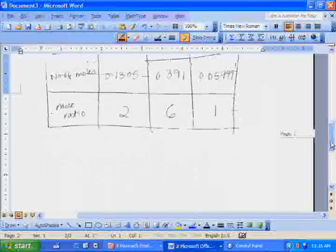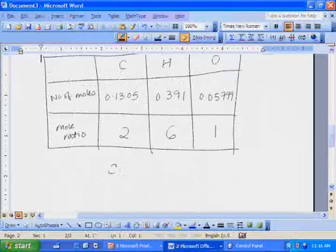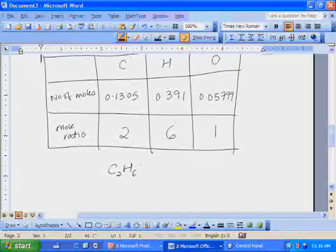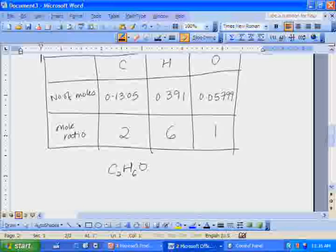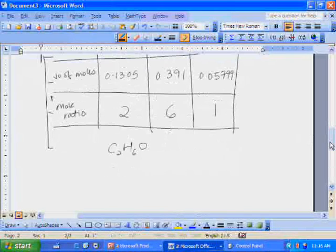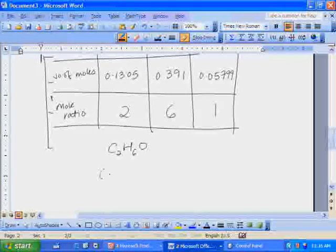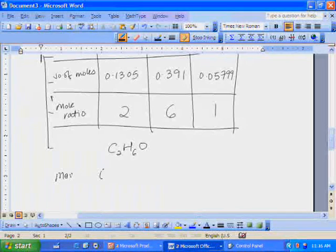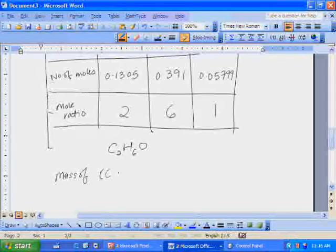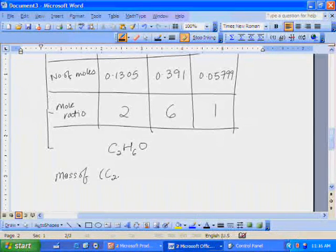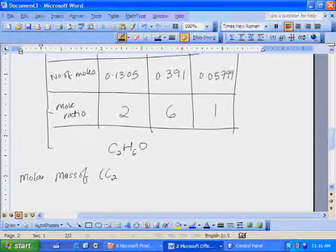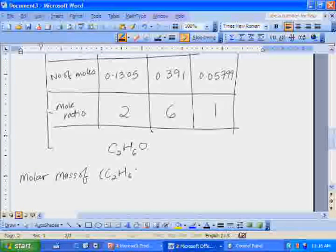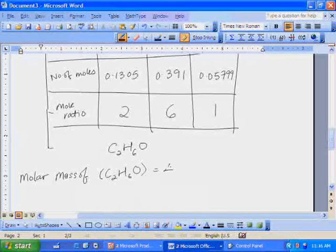So the empirical formula is C2H6O. To find the molecular formula, the molar mass of C2H6O is equal to 46.